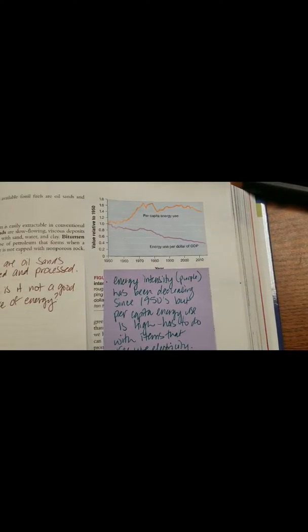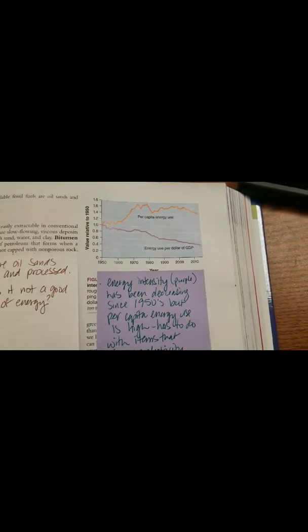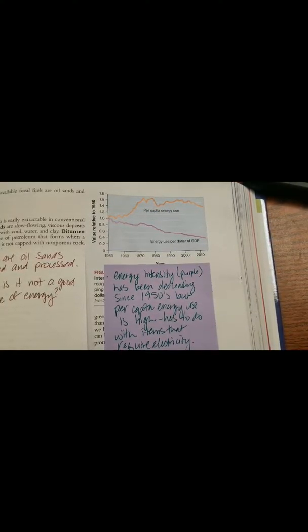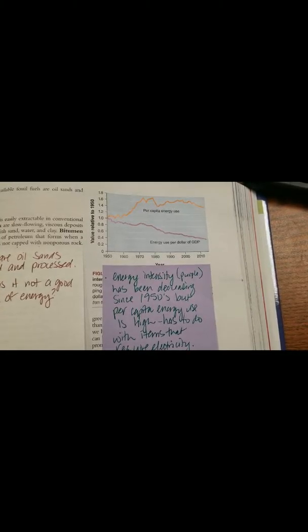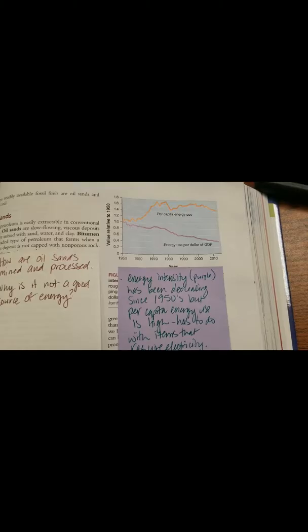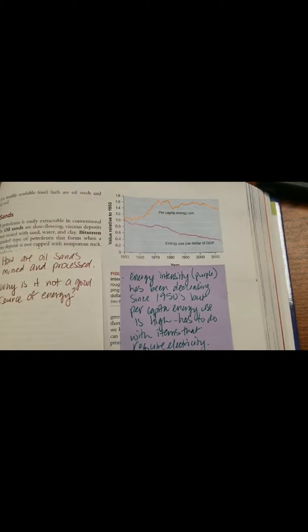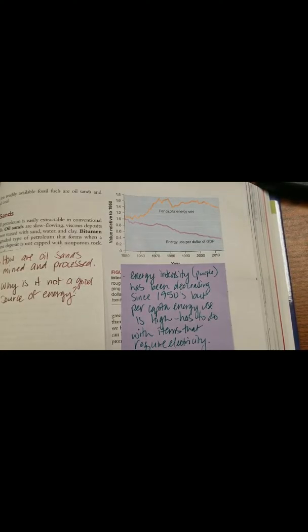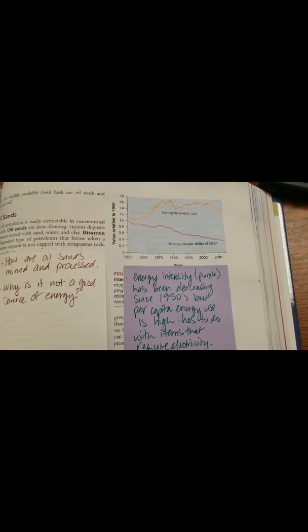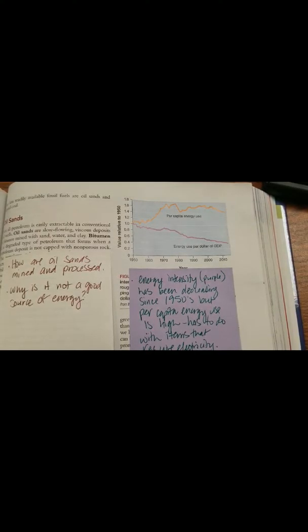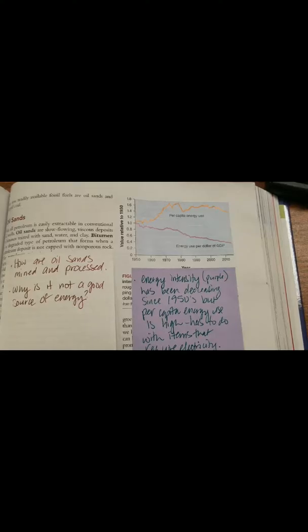This figure up here shows energy intensity, which is in the purple. Energy intensity is the energy use per gross domestic product. Notice how that's declining. It's been declining since 1950s, but yet our energy use has gone up. So why is that? Why, even though we're using less energy and we're being more efficient, why is energy use going up? Think about maybe what your grandparents had as growing up. Did they have cell phones? They have electronics like we have always plugged in? Or was it much different? That is one of the main reasons why the per capita energy use has increased, but the energy use per dollar of the gross domestic product has declined.